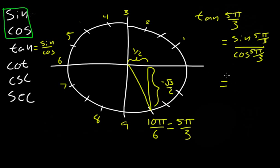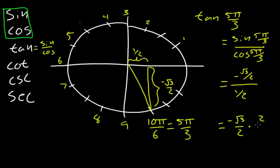So the sine of 5π/3 is negative √3/2, divided by the cosine of 5π/3, which is 1/2. We multiply by the reciprocal: negative √3/2 times 2/1. The 2's cancel out, and the answer is negative √3. So tangent of 5π/3 is negative √3.